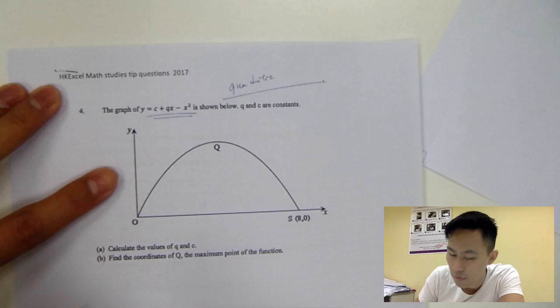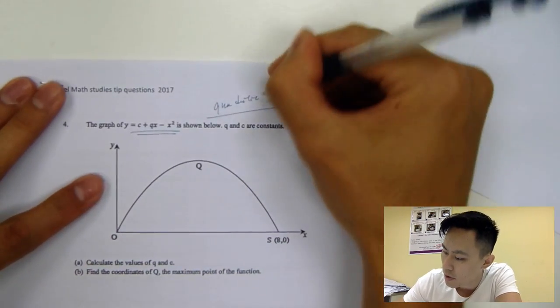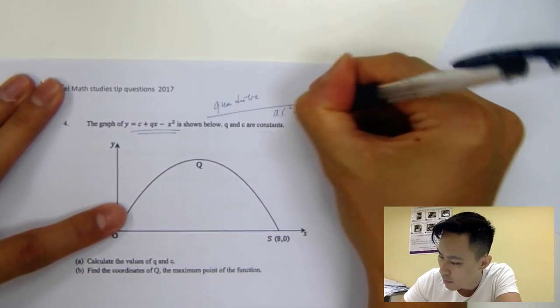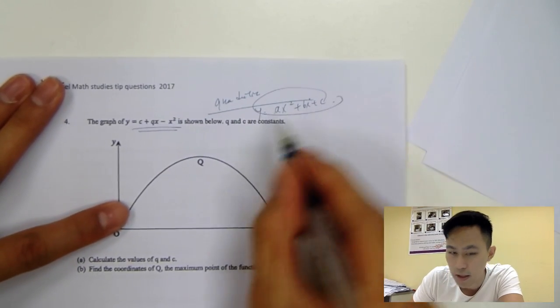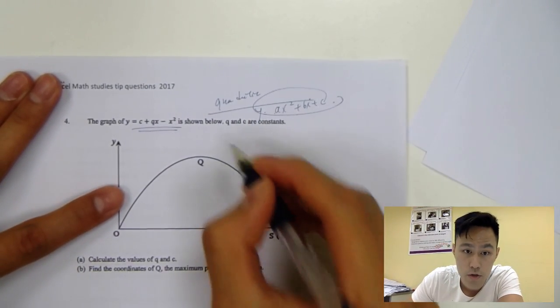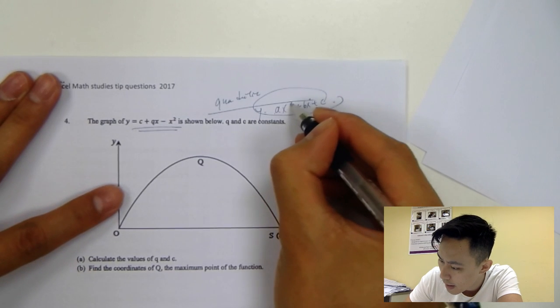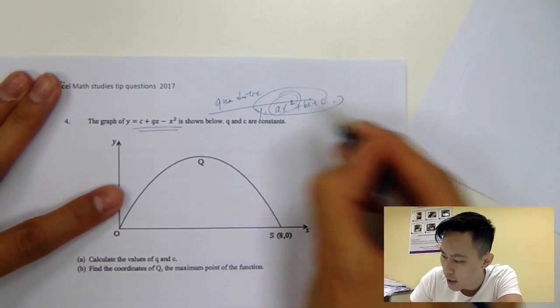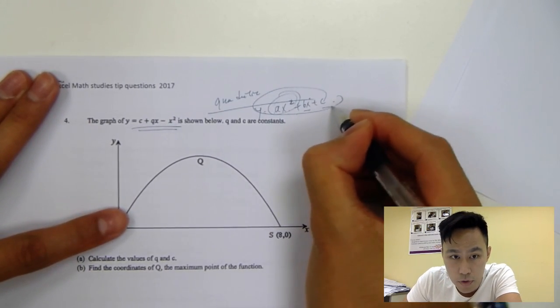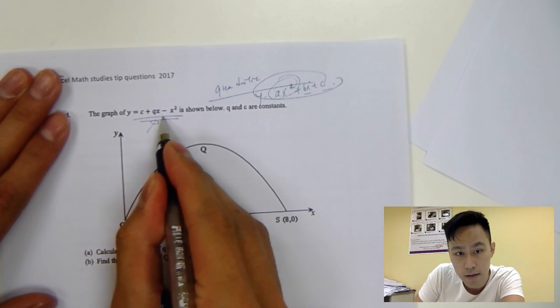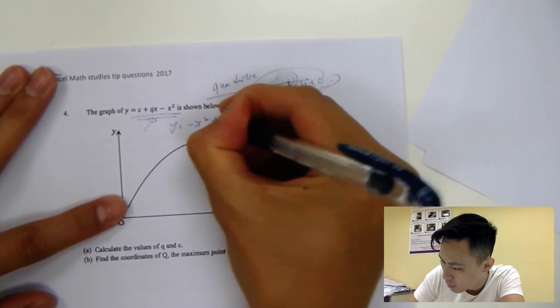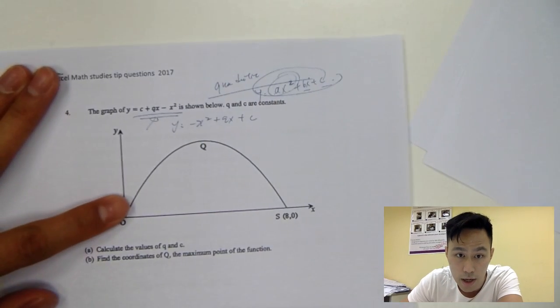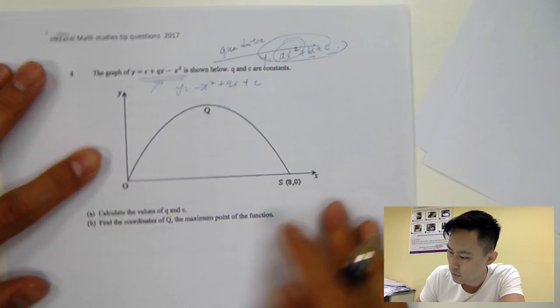First of all, whenever you see quadratic equation, always remember it's only about ax squared plus bx plus c. So whenever you see the equation, if it's not arranged this way, always rearrange into this way first. The power 2 must be at front, and then x and the numbers. So you see that the question, the equation right here, you change it into minus x squared plus qx plus c. Let's read the question first.